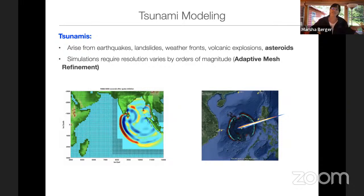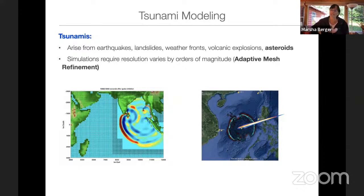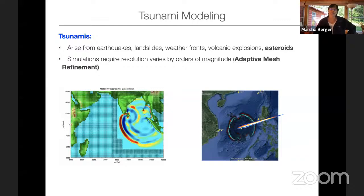What all of these have in common is that the simulations require resolution that varies by orders of magnitude. For example, when a tsunami crosses an ocean, we're talking kilometer scale, but when it reaches the shoreline and you want to know how much of the coastline is inundated — how far do you have to go to evacuate — we need resolution on the order of meters. So adaptive mesh refinement is going to be an important tool in the simulation process.